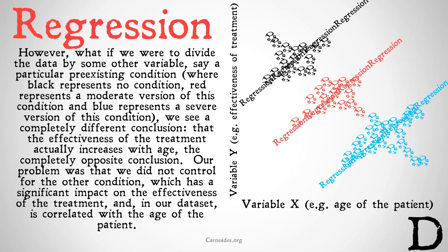Our problem was that we did not control for this confounding variable, which has a significant impact on treatment effectiveness and is correlated with the age of the patient. The older a patient is, the more likely they are to have had this particular pre-existing condition, and the more likely they are to have a severe version of it. That pre-existing condition is correlated with treatment effectiveness. But if we're aware of whether a patient has had that pre-existing condition, we can get a better picture of how effective the treatment will be and find that it actually increases in effectiveness with age, not decreases.